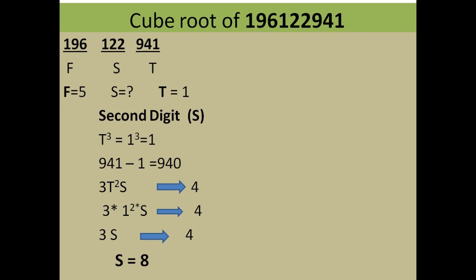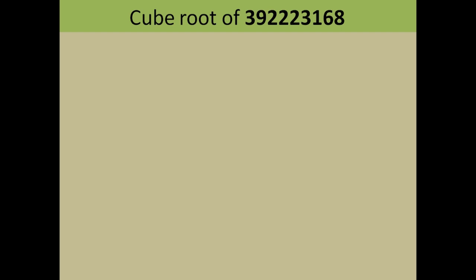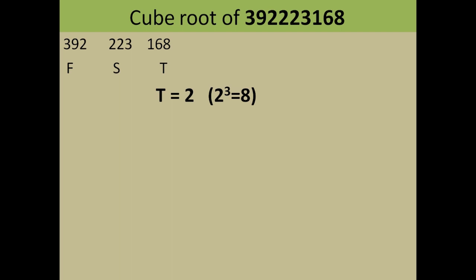This method works whenever you are finding the cube root of any seven- to nine-digit number ending in an odd digit. For even digit endings, a little extra work is needed. Let's find the cube root of 3,092,223,168. Dividing into groups of three, the last digit is 8. Since only two cubed gives a last digit of 8, your third digit is automatically 2.